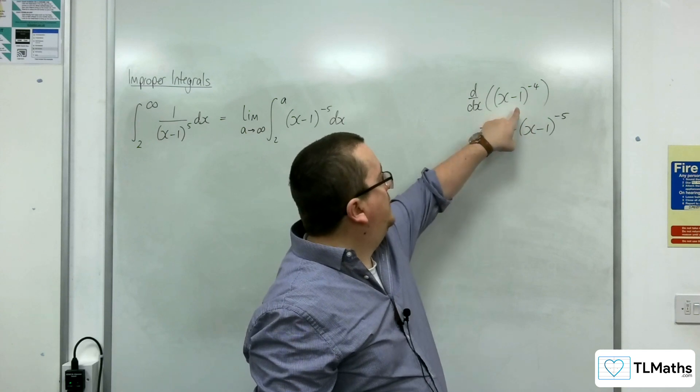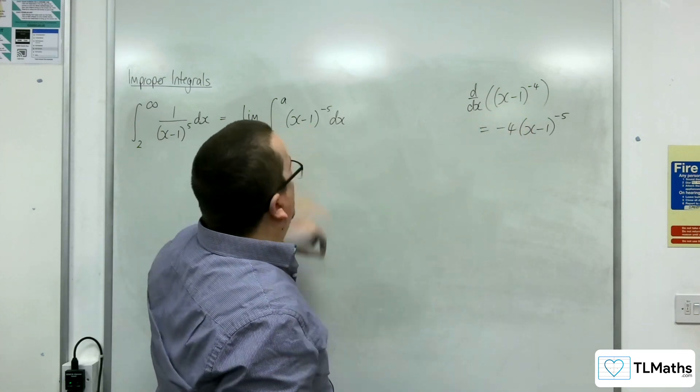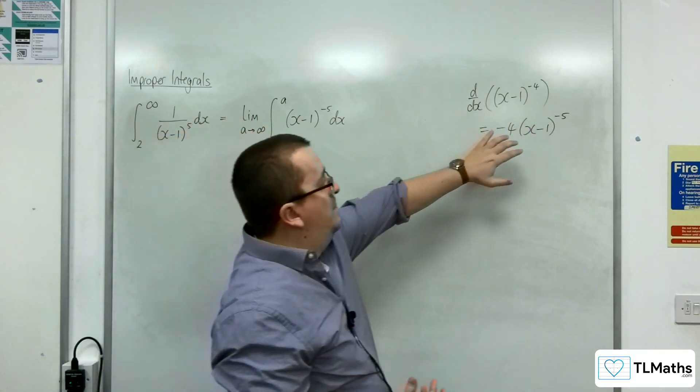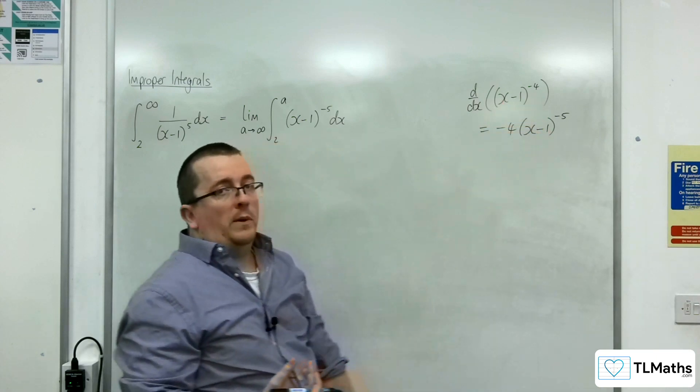So I know that that differentiates to that, so this integrates to that. So this will integrate to 1 over the minus 4 times (x minus 1) to the minus 4.